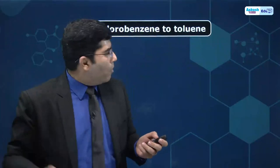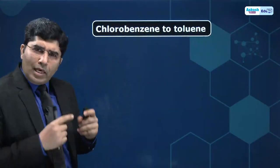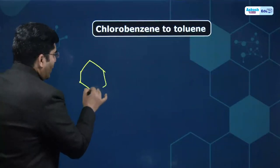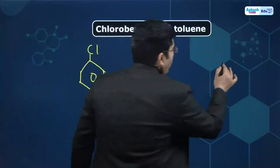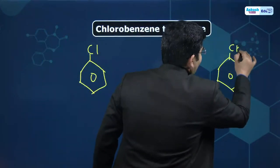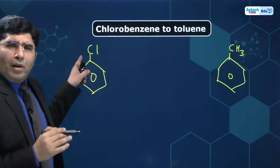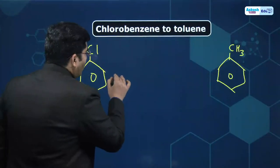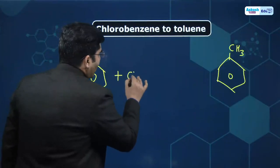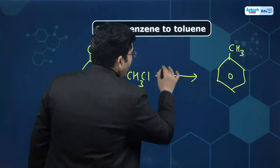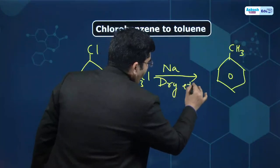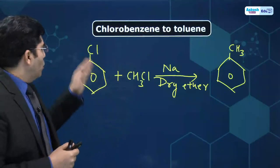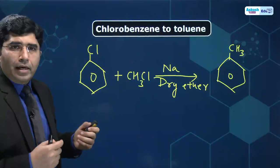Okay, no problem. Let's take the conversion: chlorobenzene to toluene. We have to apply our prior knowledge. What I need to do is: I need to remove the chloro group and add a methyl group. You might remember that the Wurtz-Fittig reaction applies here. So: chlorobenzene + CH3Cl in the presence of sodium and dry ether gives toluene very easily.